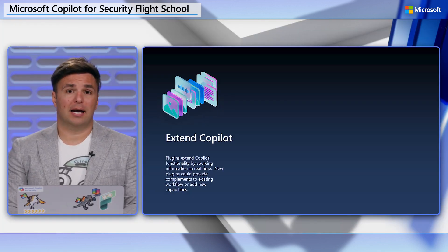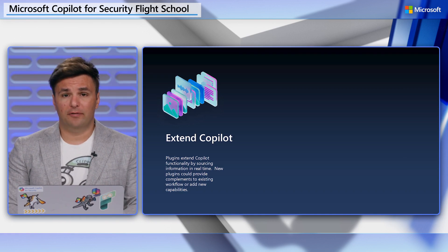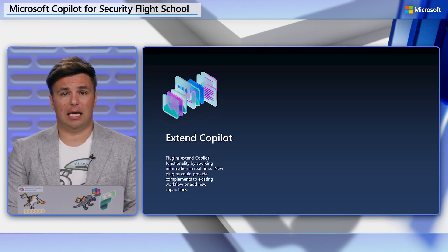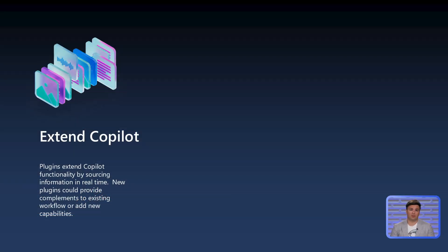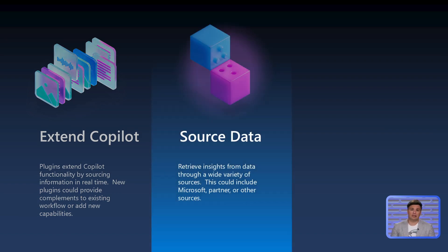Plugins, as we talked about with AI orchestration and our phishing example, extend the capabilities of Microsoft Copilot for Security by retrieving real-time information to allow users to interact with that information in a natural way. Copilot uses different sources enabled through plugins such as Microsoft's own security products, partners, open-source intelligence feeds, and websites to create guidance that's customized to your organization.